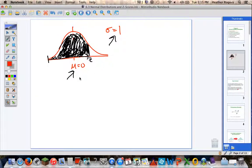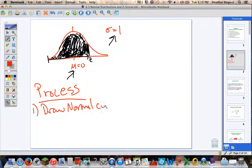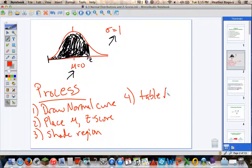Let's recall that process. One, draw the normal curve. Draw your picture. Step 2 was place the mean and the z-score. Three was shade a specified region. Shade the region you want to deal with. Step 4 was use table A2, your z-score table, to find area, which is the probability.